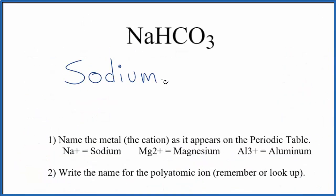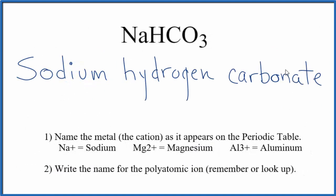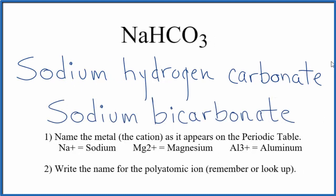So we have sodium, and then we need to write hydrogen carbonate. The name for NaHCO3 is sodium hydrogen carbonate. Another name you'll see a lot is sodium bicarbonate. And finally, another name is just baking soda — this is common baking soda used in cooking.